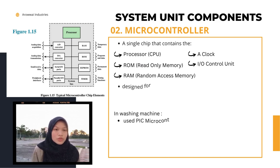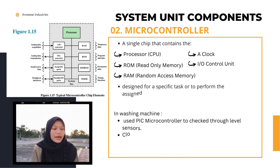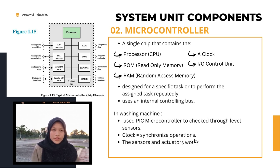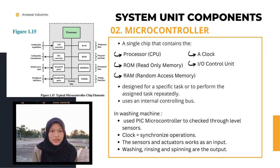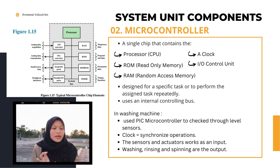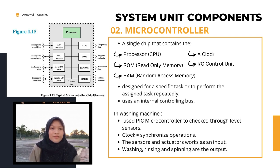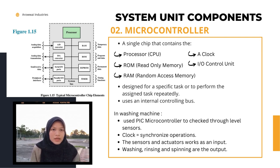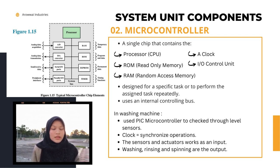A microcontroller is used in a washing machine to control all tasks such as the washing cycle and to drive external output devices such as the water drain. A microcontroller can be defined as a single chip that contains the processor, non-volatile memory for programs (ROM — read-only memory), volatile memory for input and output (RAM — random access memory), a clock, and an input/output control unit. For example, in a washing machine, a PIC microcontroller is used to check through level sensors when closing and opening valves for adding water.